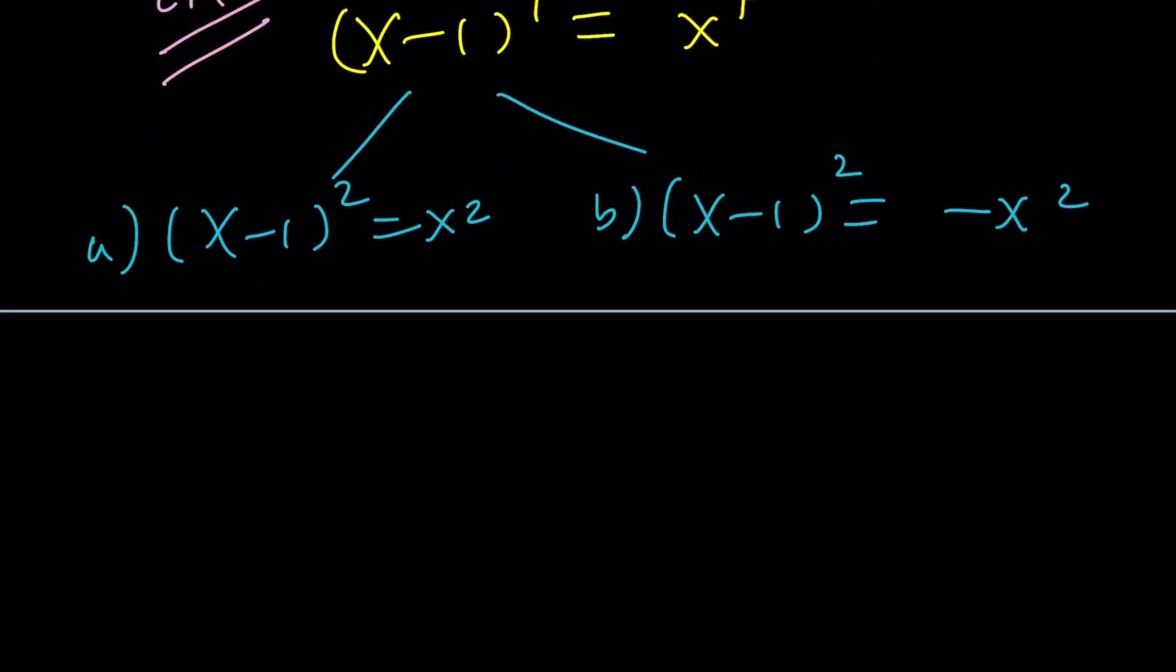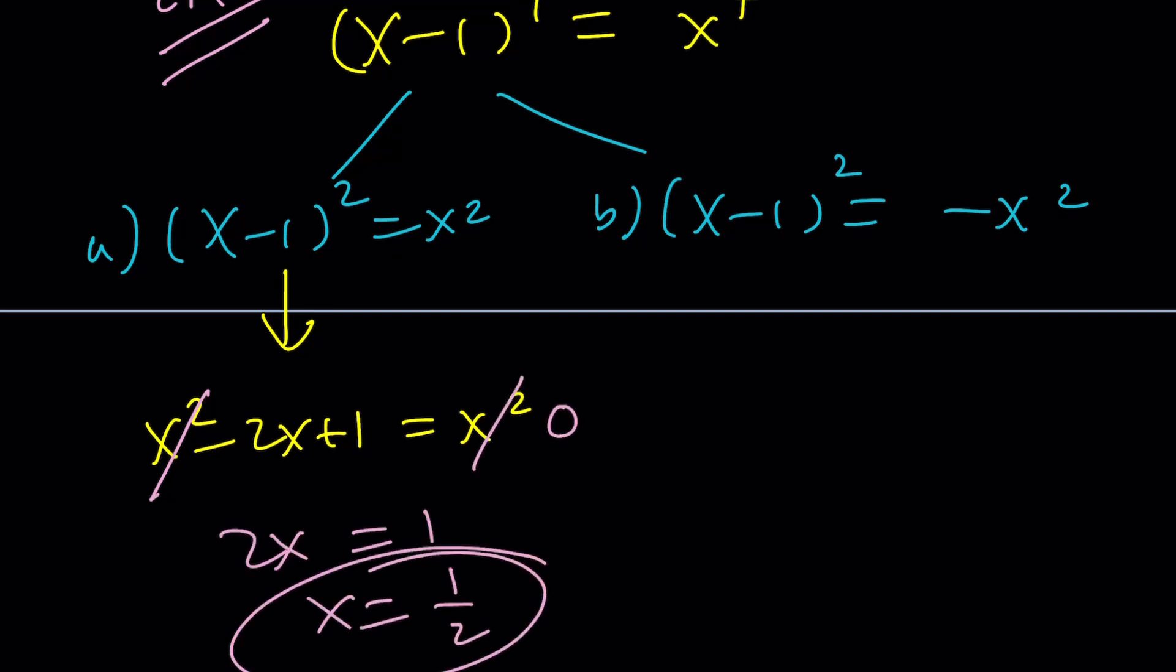Let's call this a, let's call this b. So let's do 2a first. x^2 - 2x + 1 = x^2. And then x^2 is going to cancel out, leaving us with 2x = 1, x = 1/2. We knew that, right? We already got it with the first method.